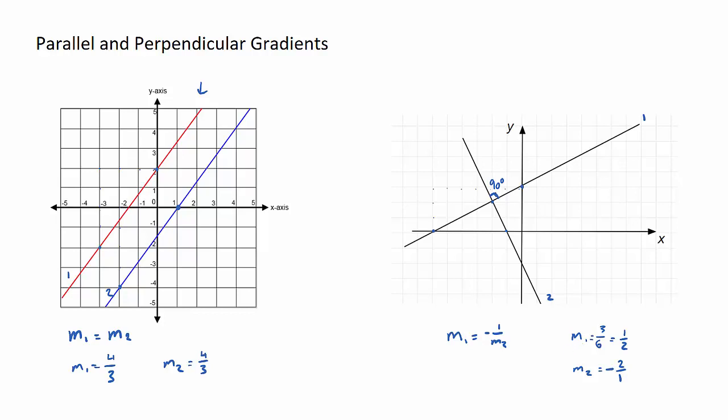This has a negative reciprocal relationship. Let's just prove that. So m1 is one on two, and if I'm going to perform this relationship here, my gradient of line two will be minus one on m1, so that is minus one on a half, and that is equal to minus two, which is what we had over here.